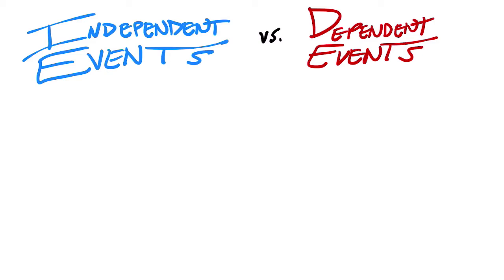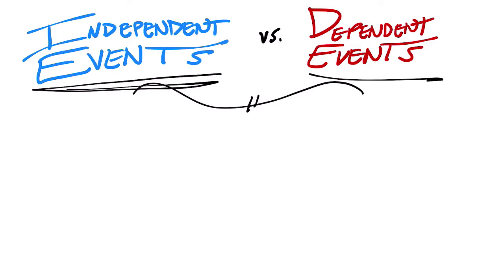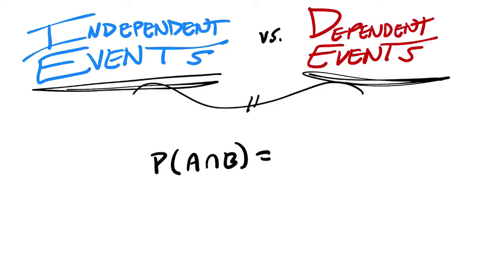Hello, welcome. I want us to accomplish at least two things in this video. The first is to develop a sense of what independent and dependent events are. And the second is to understand how to deal with them in a formula — specifically, what it means to say that the probability of A and B equals the probability of A times the probability of B given A, for all events.